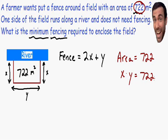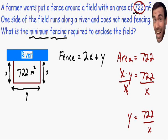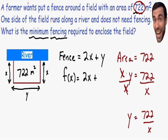I'm going to solve for y by dividing both sides by x, so the x's cancel and y equals 722 over x. Now we can reduce the fence equation to one variable. The fence function f(x) equals 2x plus y, and since y equals 722 over x, I replace y with 722 over x. This equation is now written with one variable, x.